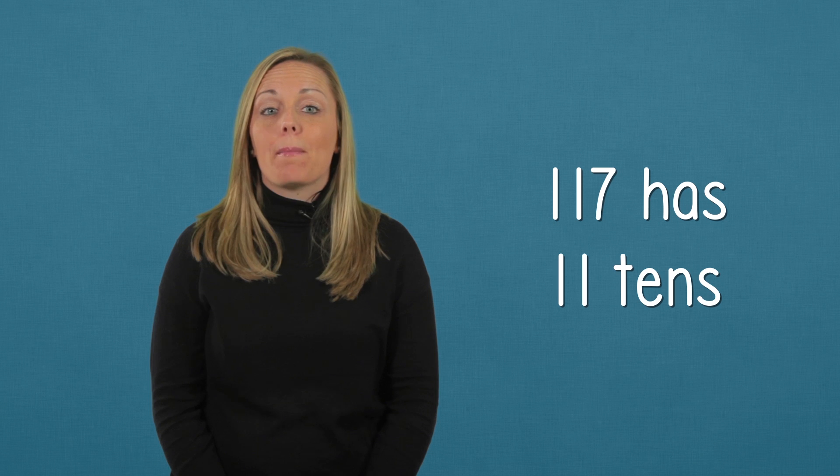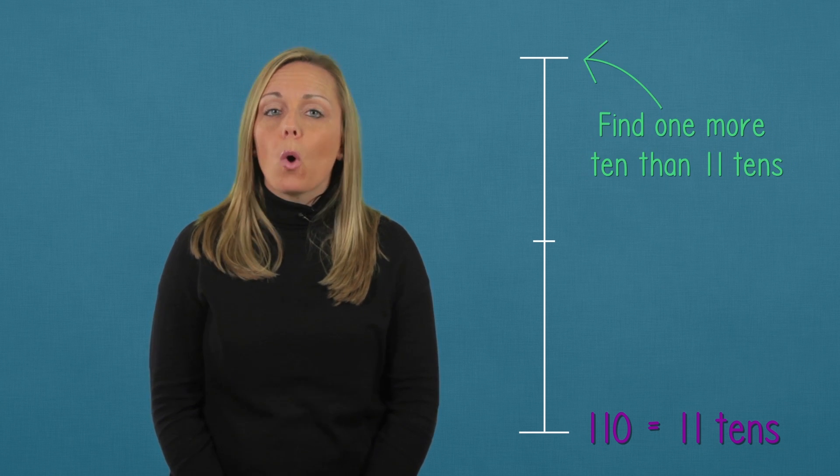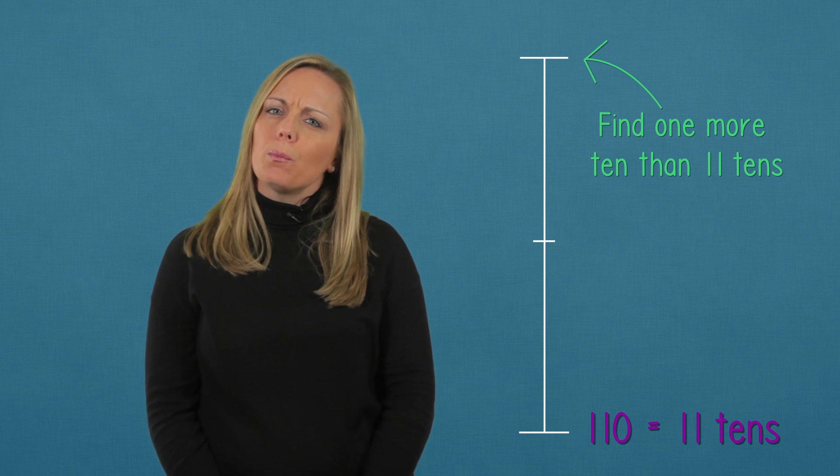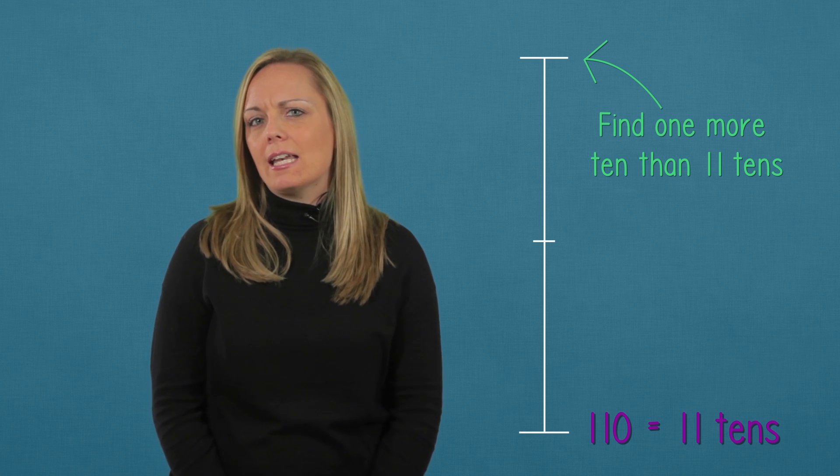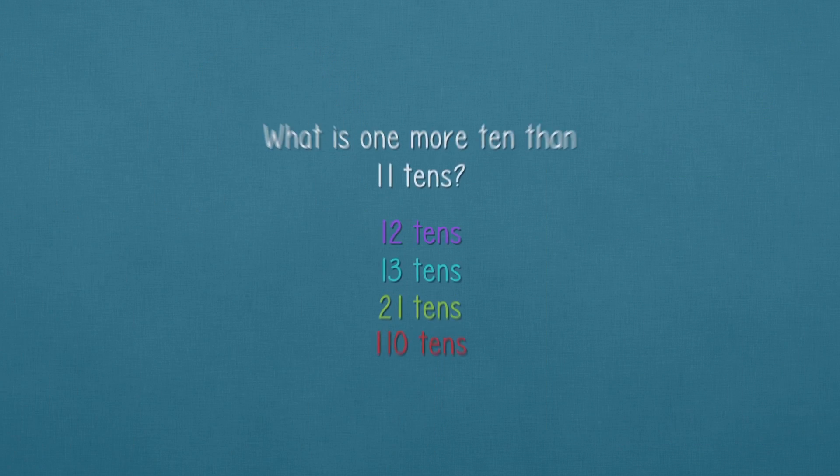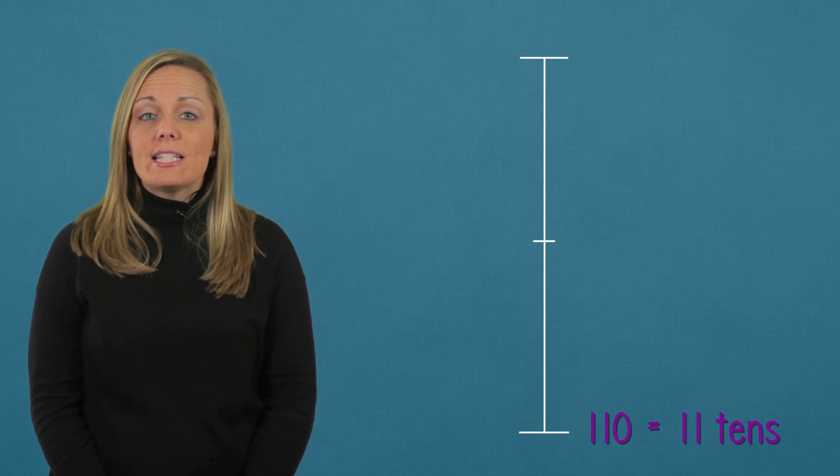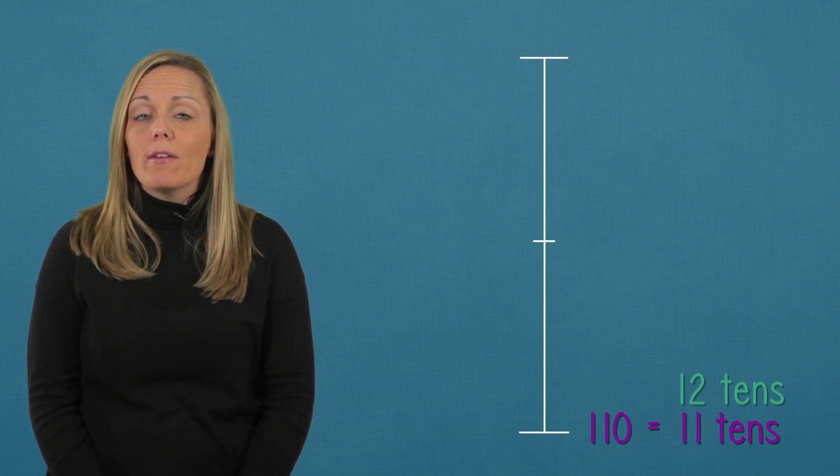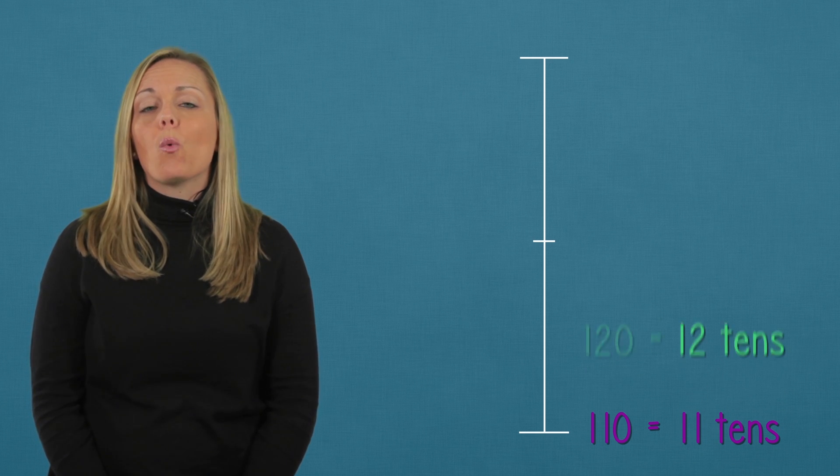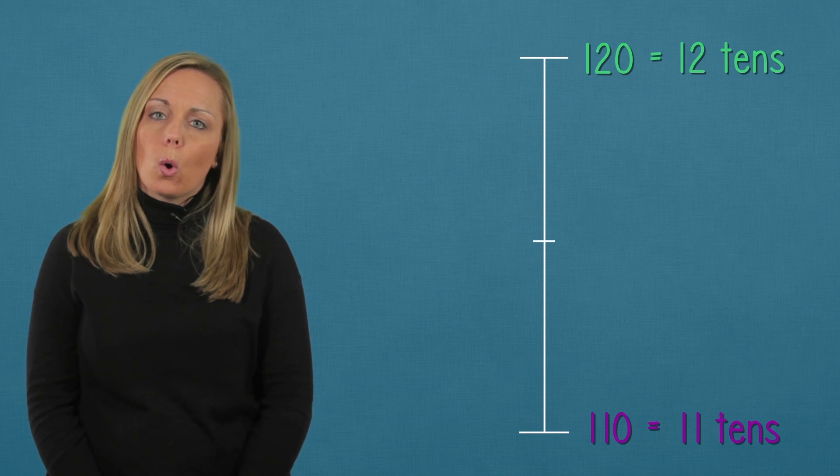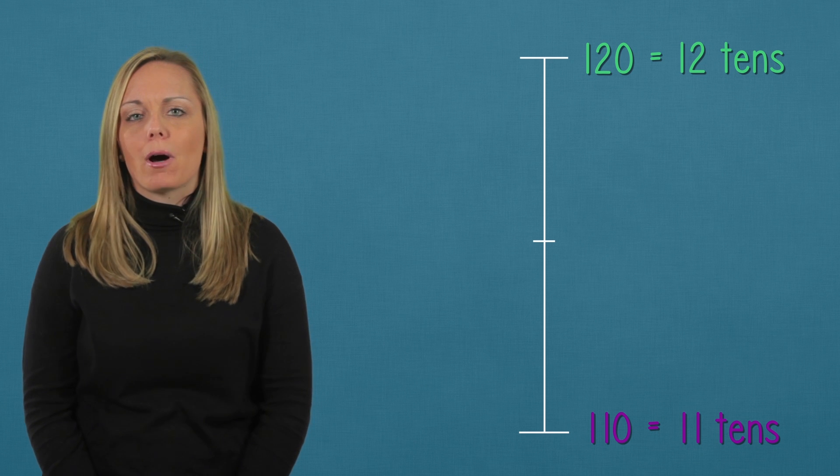Now we're ready to set up our number line. At the bottom, we'll list eleven tens. That's one hundred ten. For the top mark, we need to find one more ten. So what is one more ten than eleven tens? Eleven tens plus one ten is twelve tens. So we'll write one hundred twenty or twelve tens at the top of our number line.